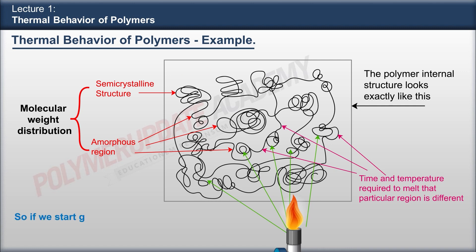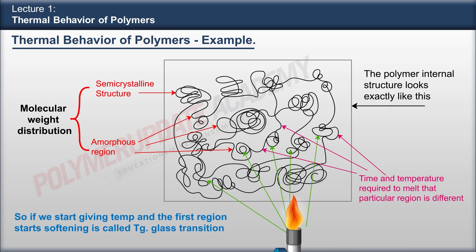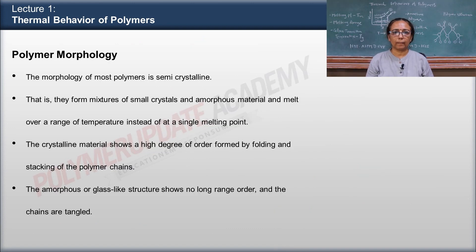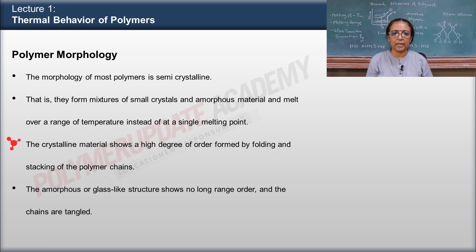So if we start giving temperature and the first region starts softening, it is called the glass transition temperature. The morphology of most polymers is semi-crystalline — they form mixtures of small crystals and amorphous material and melt over a range of temperature instead of a single melting point. The crystalline material shows a high degree of order formed by folding and stacking of the polymer chains. The amorphous or glass-like structure shows no long-range order and the chains are tangled.